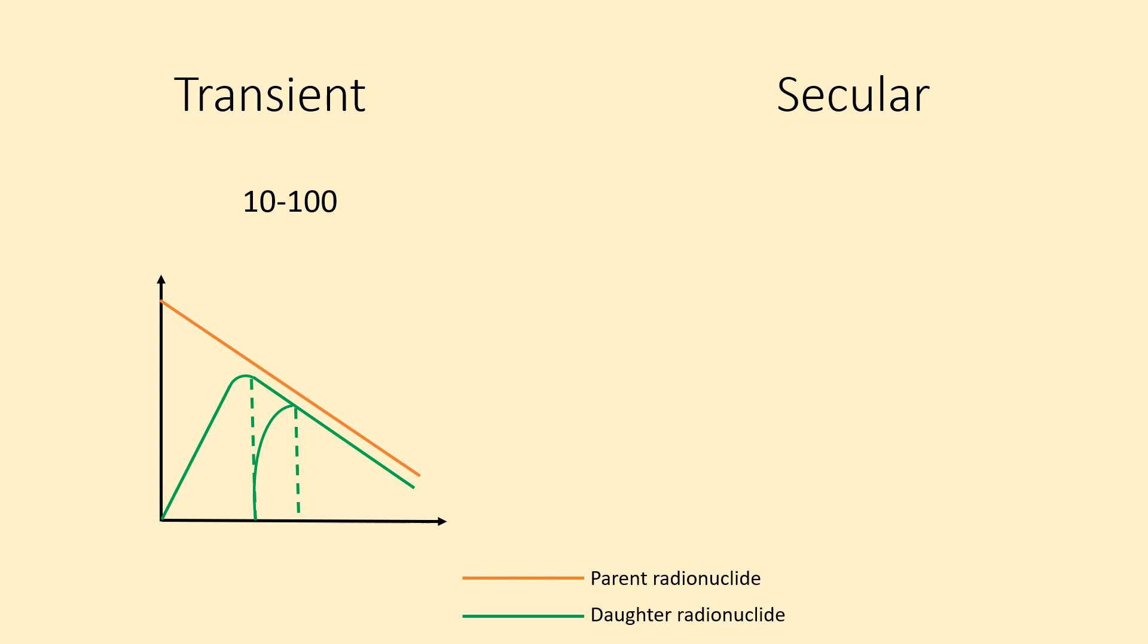Just like a cow requires one day to replenish its store of milk, in a generator too, for maximum obtainable yield of daughter radionuclide, adequate time of four half-lives is required for activity to grow.